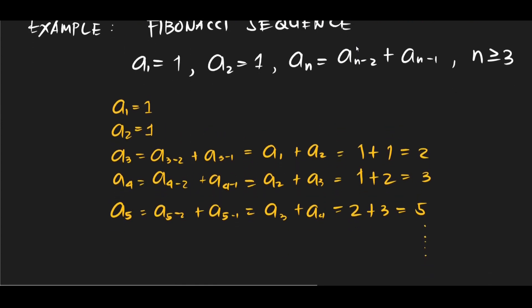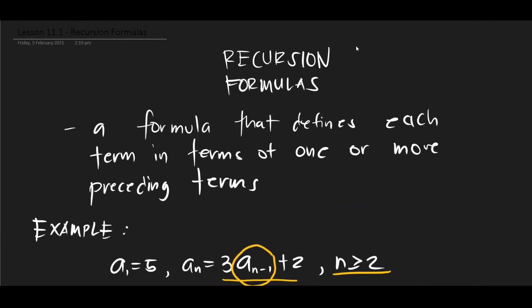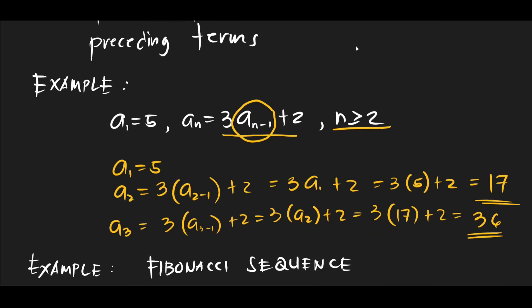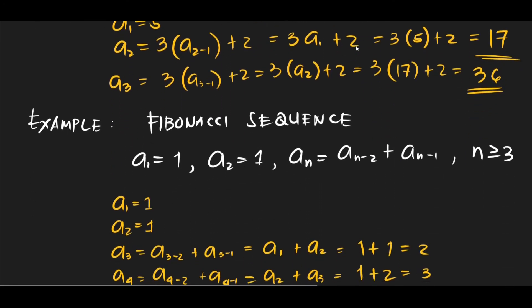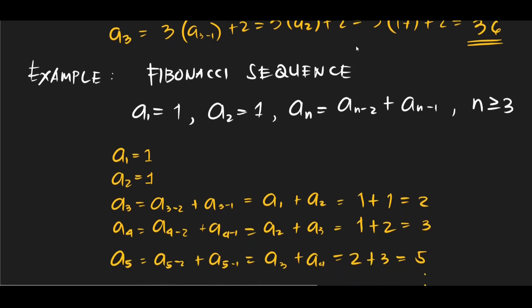So you can generate it just like that. So if we go back to our definition, we have a formula that defines each term in terms of one or more preceding terms. If we take a look at our first example, we used the previous term, in this case a1, in generating the second term right? And then for the a3 right here, we used a2, right? So it uses the one preceding term. Now in the Fibonacci sequence example, it uses two previous terms. a1 and a2 if you want to generate a3, and for a4 you use a2 and a3.